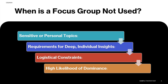Logistic constraints are another reason to avoid focus groups — when gathering participants in one place is impractical due to time, location or resource limitations, for example with participants who have highly varied schedules or are spread across the country. There is also the high likelihood of dominance, where one or a few participants might dominate the discussion and skew the results, such as in groups where social dynamics inhibit open discussion, like a focus group with both senior and junior staff members.